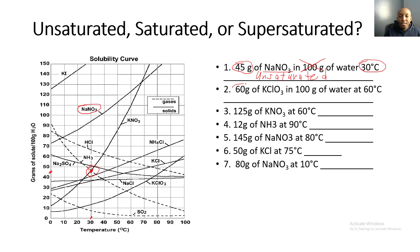Next: 60 grams of KClO₃ in 100 grams of water at 60 degrees Celsius. We find KClO₃ and circle it so we can identify it quickly, then we plot our point at 60 grams and 60 degrees Celsius.